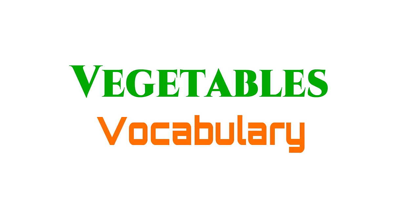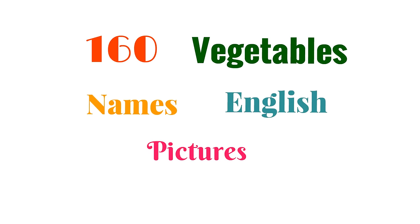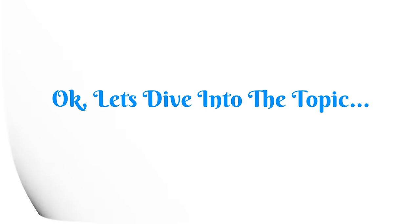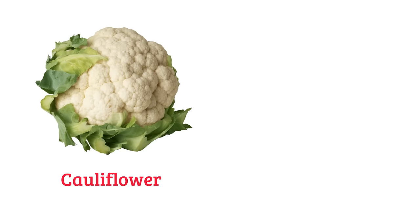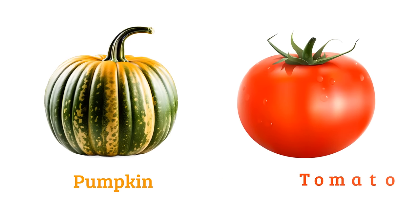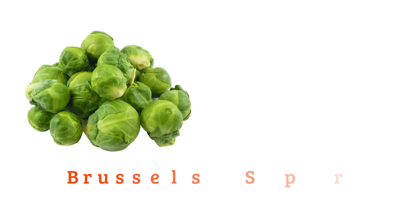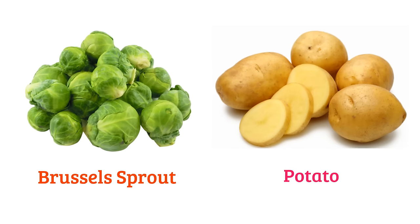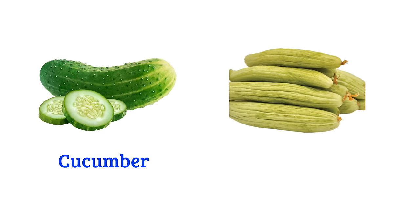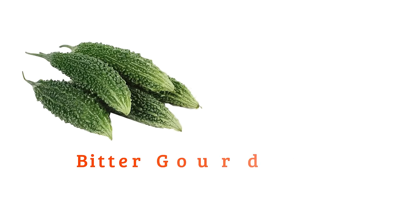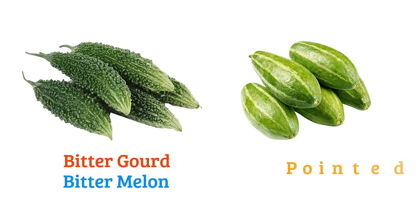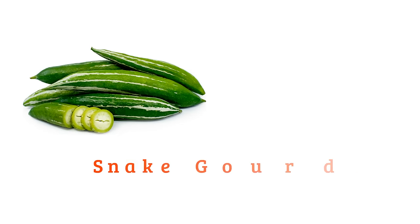Vegetables vocabulary: about 160 vegetable names in English with pictures. Let's dive into the topic. Cauliflower, cabbage, pumpkin, tomato, Brussels sprout, potato, raw papaya, raw banana, cucumber, Armenian cucumber, bitter gourd or bitter melon, pointed gourd, snake gourd.